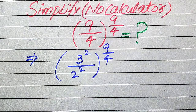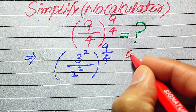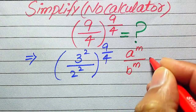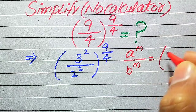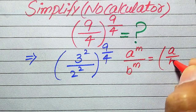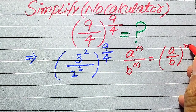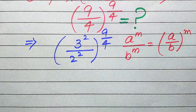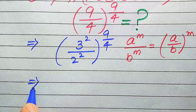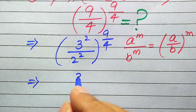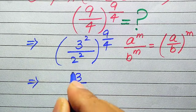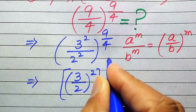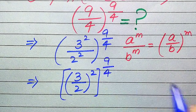We use the exponential law: if we have a to the power of m divided by b to the power of m, we can combine the exponents and write it as (a divided by b) to the power of m. Applying this rule, we combine the exponents of both terms to get (3 over 2) to the power of 2, with the whole power being 9 divided by 4.